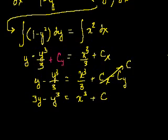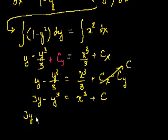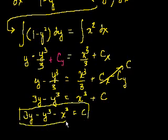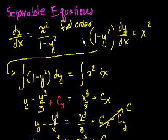We have solved the differential equation, although it's in implicit form and it's fairly hard to get it out of implicit form. We could write the solution as 3y minus y to the third minus x to the third equals c. The solution is a class of implicit functions because we have that constant — depending on what number you pick, it will give another valid solution.